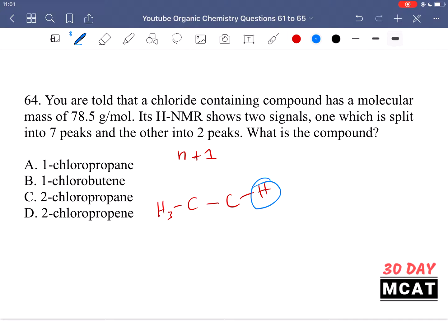Because there are three that are in the same environment, they're going to split it into N plus one peaks, meaning four peaks. So if we have seven peaks from this one, that means we have six hydrogens in a similar environment, and then two peaks over here, meaning we have one hydrogen in a different environment. So we need to look at a compound which has this type of arrangement.